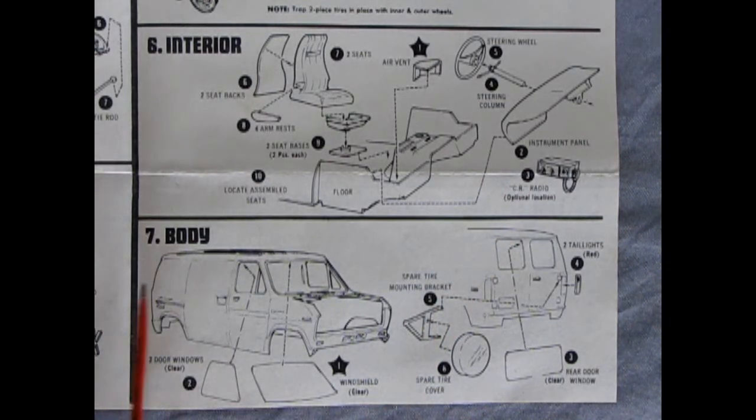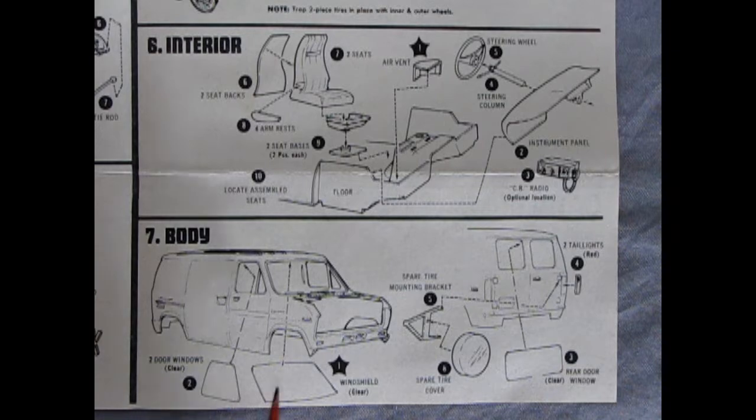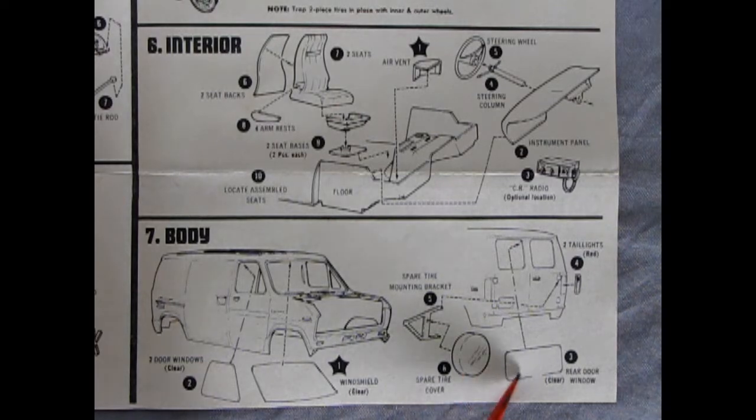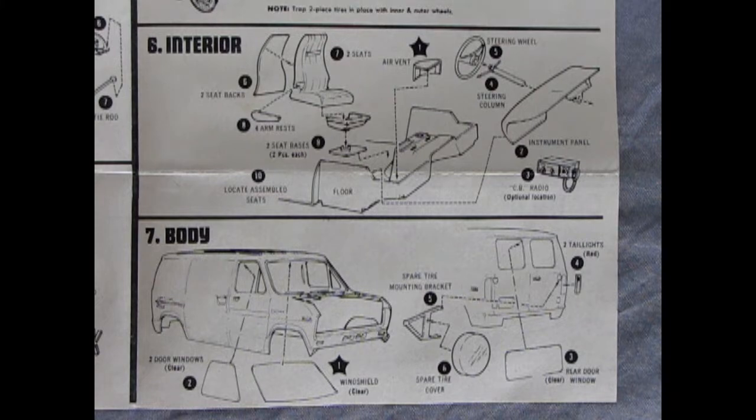Then we get into panel 7 down here with our body, showing our glass going in from behind, and then we've got a nice spare tire mounting bracket here. Our spare tire, our rear clear window going into the back of the body as well as our red taillights.